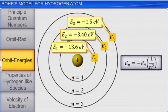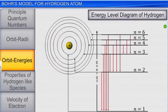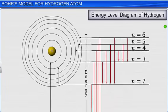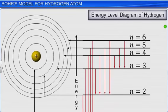Note that the energy of the stationary state, n equal to infinity, is 0. At this energy level, the electron is completely free from the influence of nucleus. In other words, the hydrogen atom is said to be ionized.